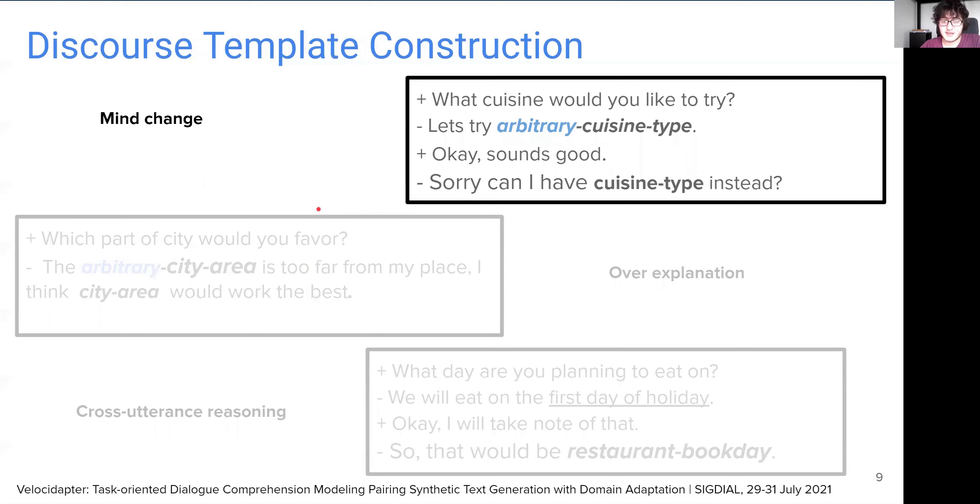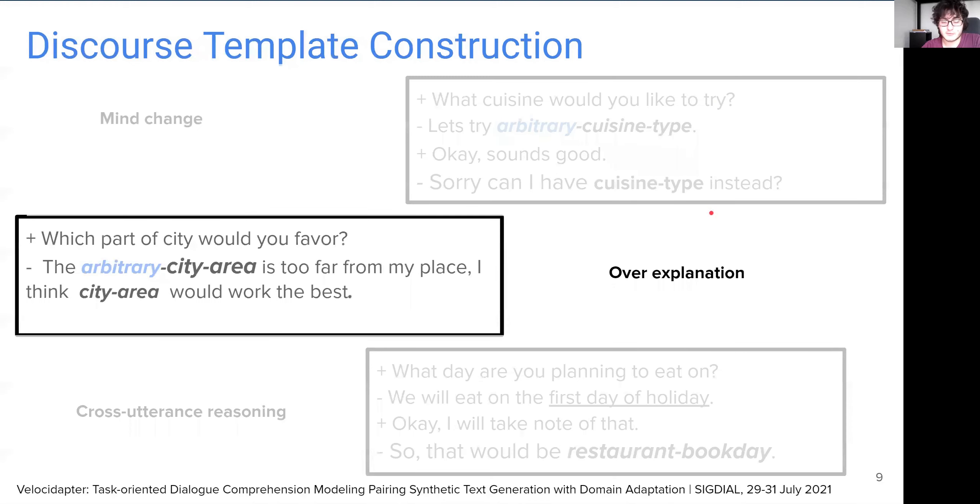Defining these discourse templates as dialogue chunks composed of several turns lets us design complex templates that tackle dialogue-specific challenges. The first template, for instance, is designed for the mind change scenario, where the user changed their previous preference for the cuisine type to another in the incoming turns. Similarly, the second one is a template where an over-explanation scenario is tackled. The user in the second turn provides two potential answers for the same question, although the correct value is the latter one.